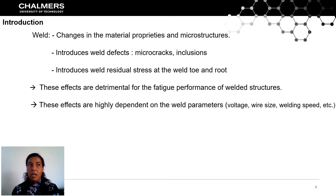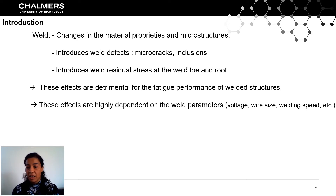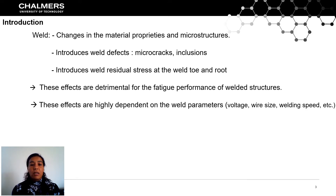The weld parameters include the welding speed, the voltage, and the wire size — how the structure was welded. It was stated in the literature that microcracks and residual stresses are the most important parameters that affect the performance of as-welded structures.